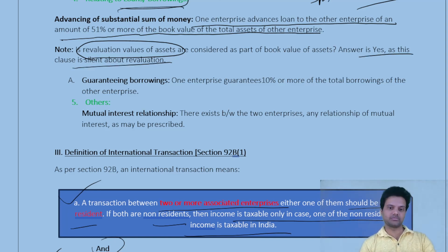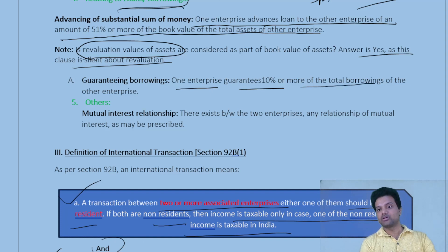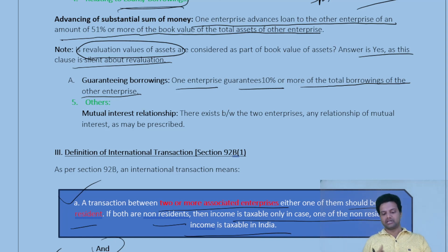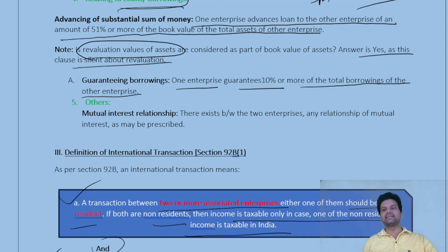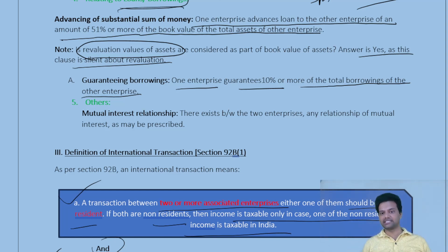The last point under loans and borrowings: guarantee borrowings. If one enterprise guarantees 10% or more of the total borrowings of another enterprise — regardless of the type of loan — and gives a guarantee to pay in case of failure, then both enterprises are said to be associated enterprises.